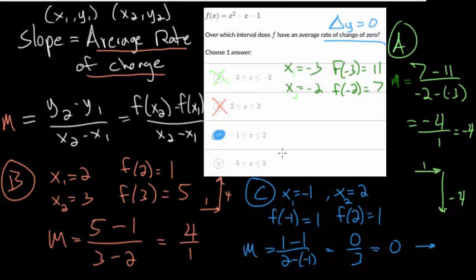And if you wanted, you can keep going and just double check with our letter d. So for this one, let me use a different color. So for this one, we have x is minus 5 and x is 5. We're going to plug those into the function. So f of minus 5, that would be 25 plus 5, which is 30, minus 1, which is 29. And f of 5, that would be 25 minus 5 minus 1, so that's 19.